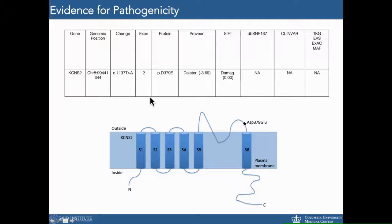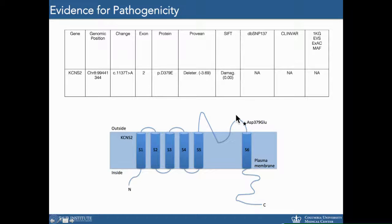In terms of evidence for pathogenicity, three in silico prediction programs — PolyPhen, SIFT, and Mutation Taster — predict that the effect of this variant is deleterious and damaging to the structure and function of the protein. The variant is very rare; it is absent from population databases including 1,000 Genomes, the Exome Variant Server, and the Exome Aggregation Consortium. A schematic of the KCNS2 protein shows the location of our mutation of interest.